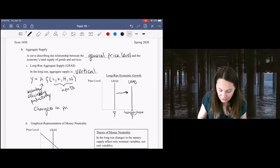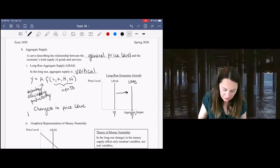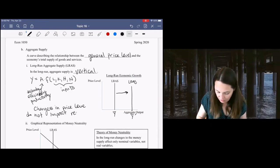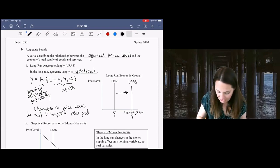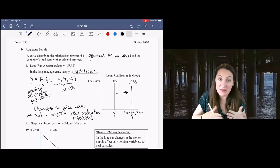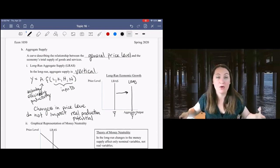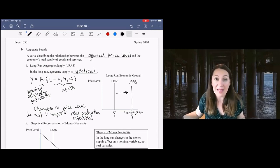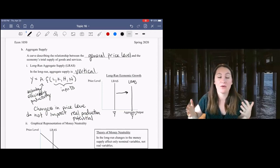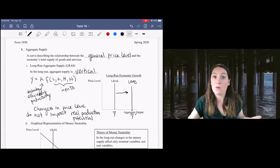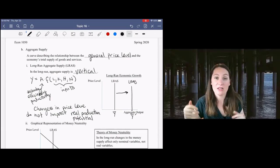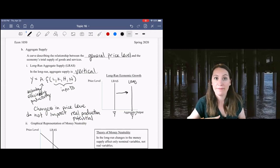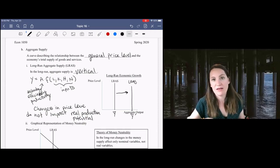Changes in the price level do not impact real production potential. We're talking about how much we can produce. If I look at the whole economy and all the goods we produce, I want to know how much can we make. That's our real production potential or potential output. What we can make is determined by our inputs and the way we transform those inputs into output. The price level is irrelevant to that question.